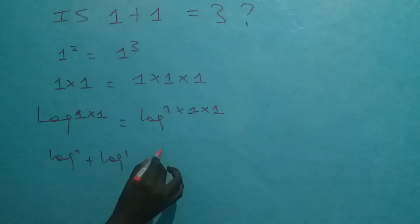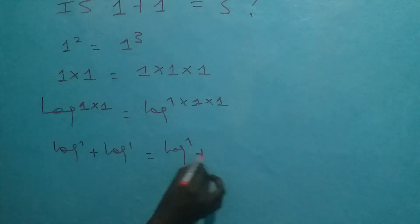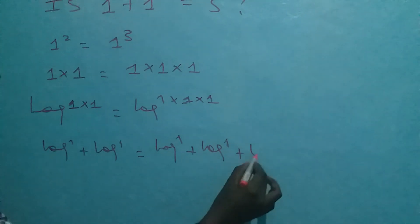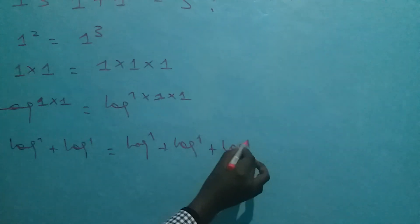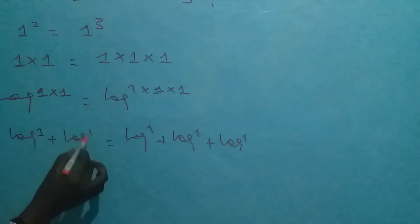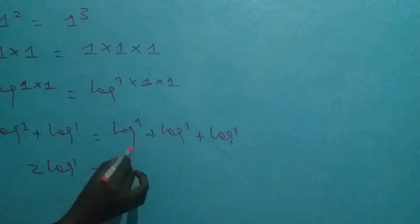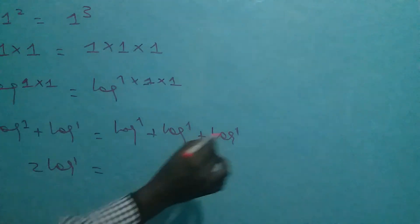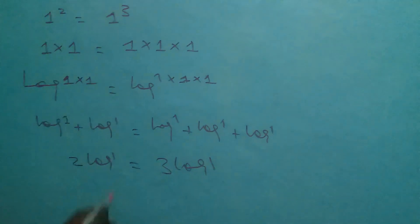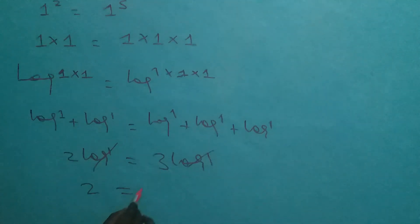And this one is logarithm of 1 plus log 1 plus log 1. So log 1 plus log 1 is twice of log 1, and log 1 plus log 1 plus log 1 is 3 times log 1. We can eliminate log 1 by log 1, giving us 2 equal to 3.